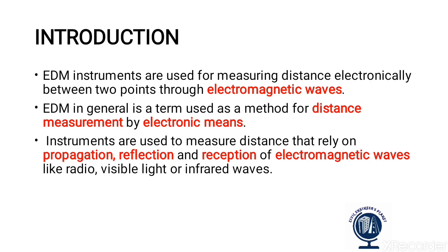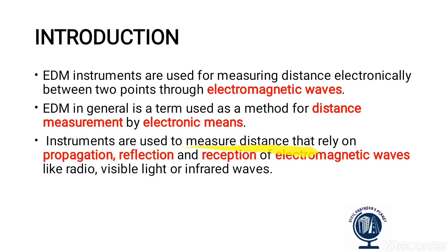First, we will discuss the introduction of EDM. EDM instruments are used for measuring the distance electronically between two points through electromagnetic waves. EDM, in general, is a term used as a method for distance measurement by electronic means. EDM instruments rely on propagation, reflection, and reception of electromagnetic waves like radio waves, visible light, or infrared waves.